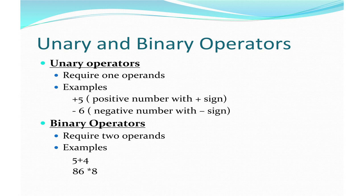A binary operator, on the other hand, requires two operands. For example, if I want to add two numbers I require two numbers — without two numbers I cannot do the addition operation. So plus is a binary operator. Similarly, other arithmetic operators are also binary operators.